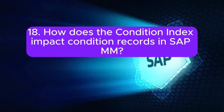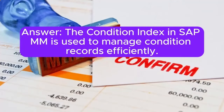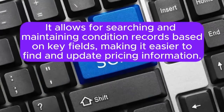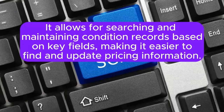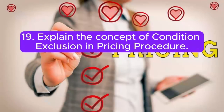Question 18: How does the condition index impact condition records in SAP MM? Answer: The condition index in SAP MM is used to manage condition records efficiently. It allows for searching and maintaining condition records based on key fields, making it easier to find and update pricing information.